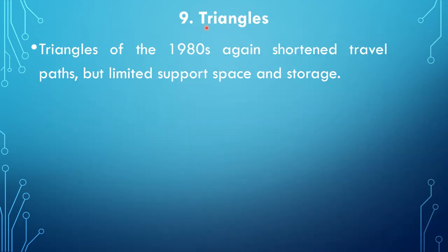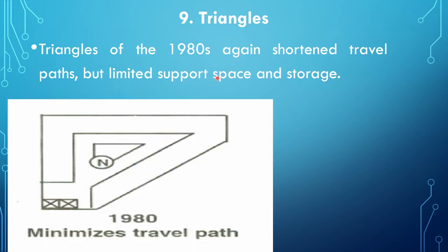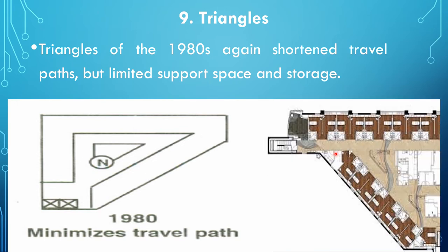The ninth type is the triangular unit, designed in the 1980s. It again shortened the travel path but had limited support space and storage. The nurse's station is at the center of the triangle, with the entrance and support services at one corner.